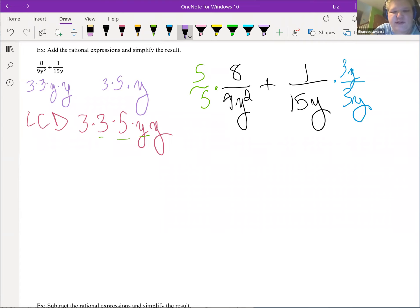So 5 times 8 on top is going to be 40. And on the bottom, 45y squared plus on the top is now 3y. On the bottom is 45y squared. They have the same denominator. So we write it all together. 40 plus 3y all over 45y squared.